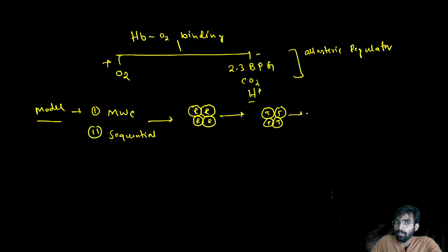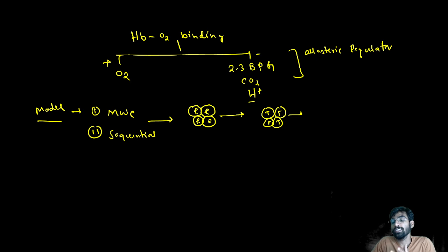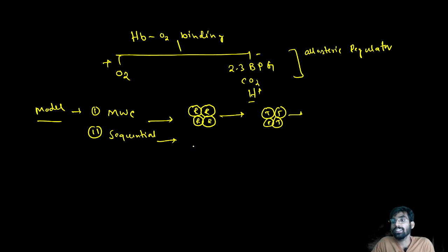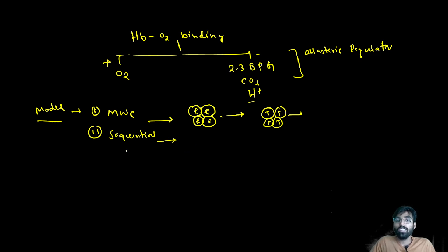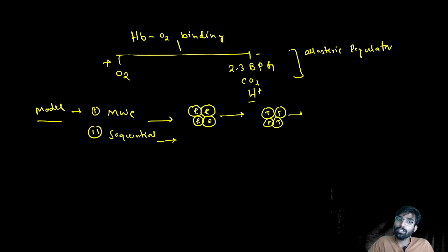In the MWC model, at a given time all subunits share the same conformation. The sequential model proposes differently: one subunit first attaches to oxygen, then alters the adjacent structure so that it becomes relaxed and can bind more oxygen. This is a step-by-step sequential change in conformation.